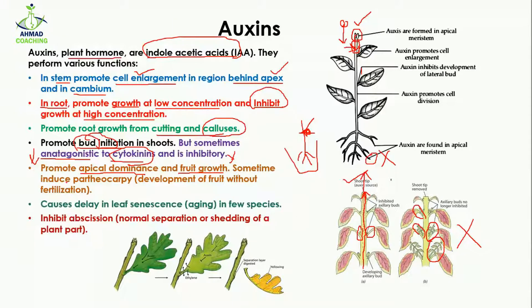Auxins promote fruit growth, but sometimes they induce parthenocarpy. Parthenocarpy is a special process in which a fruit develops without any fertilization — the male and female gametes are not fused. The fruit formed by parthenocarpy will not have any seeds.